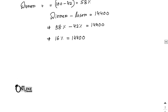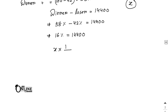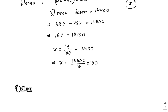Let total number of votes polled be x. So 16 percent of x equals 14,400, meaning x into 16 by 100 equals 14,400. Therefore x equals 14,400 divided by 16 into 100. Since 14,400 divided by 16 equals 900, multiplying by 100 gives 90,000 total votes polled.